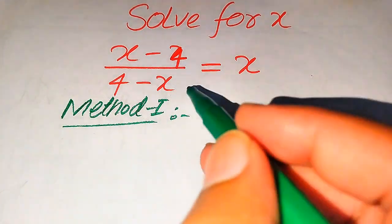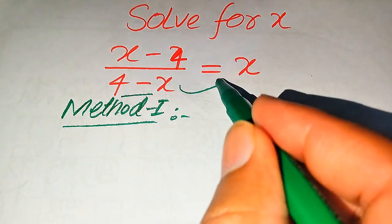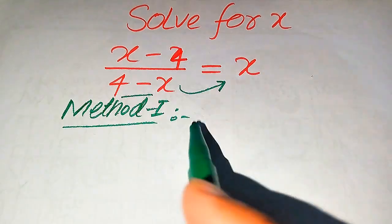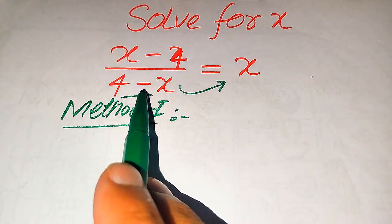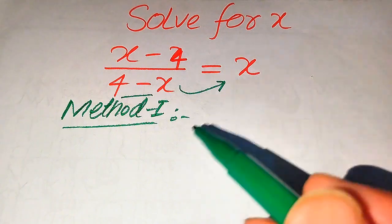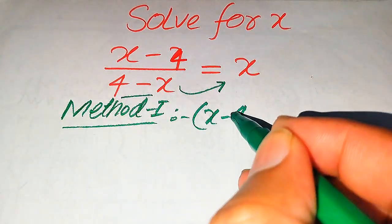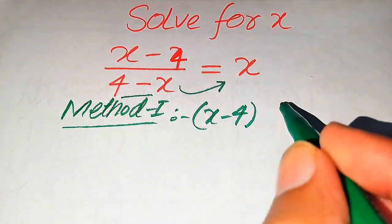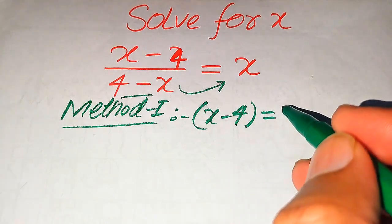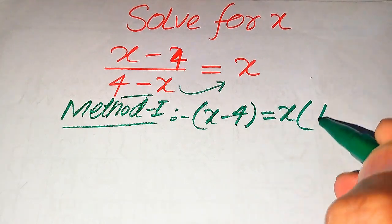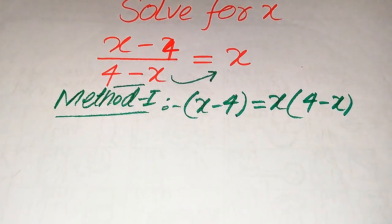In the first method, we need to move (4 minus x) to the right-hand side. Since it is divided on the left side, when we move it to the right-hand side it becomes multiplied by x. So it will be written as: x minus 4 equals x times (4 minus x).